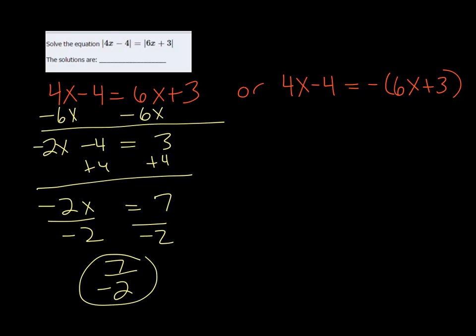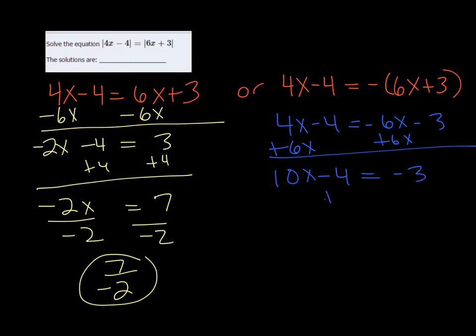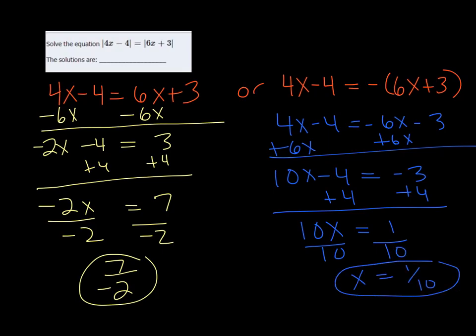On the other side, we can distribute the negative, so minus 6x minus 3, add 6x to both sides to get all our x's together, and we get 10x minus 4 equals negative 3. Add 4 to both sides to isolate our variable, and we get 10x equals 1. If we divide both sides by 10, we get that x is 1 tenth. So both of these will be your answers.